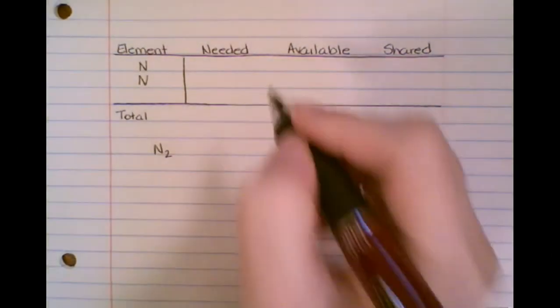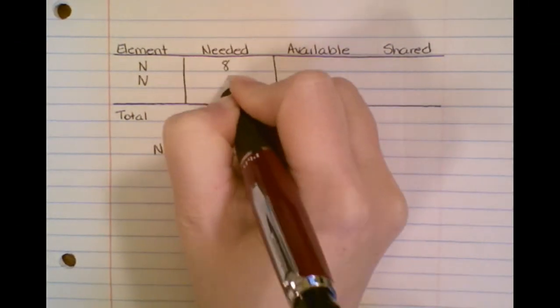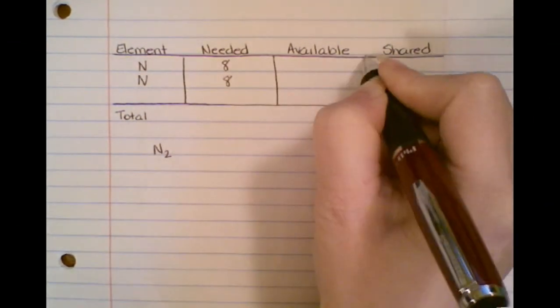I have two nitrogen, so my element is an N and an N. Now how many are needed? Well, they want to be the octet, right? So each one would like to have eight. But we only have how many available?